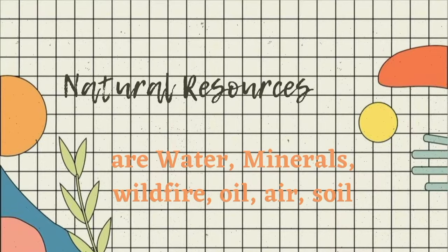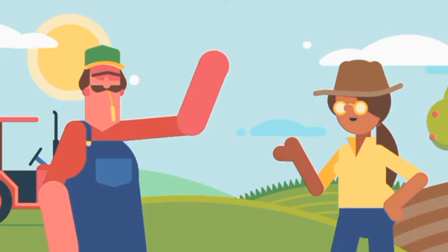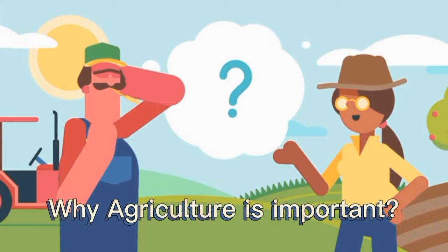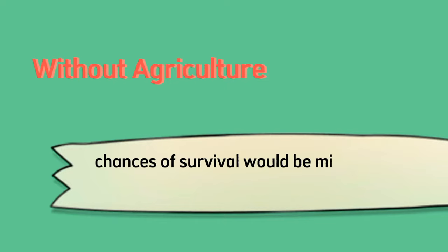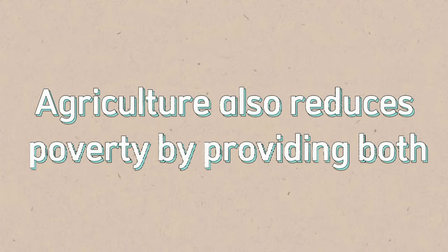Now we move on to our main topic: why is agriculture important? Agriculture plays a great role in different aspects of our lives. Agriculture is the backbone of the economic system of a given country. It provides the foundation through which people survive, through the provision of food to both humans and their animals. Without agriculture, chances of survival would be minimal, as both people and livestock would die from starvation.